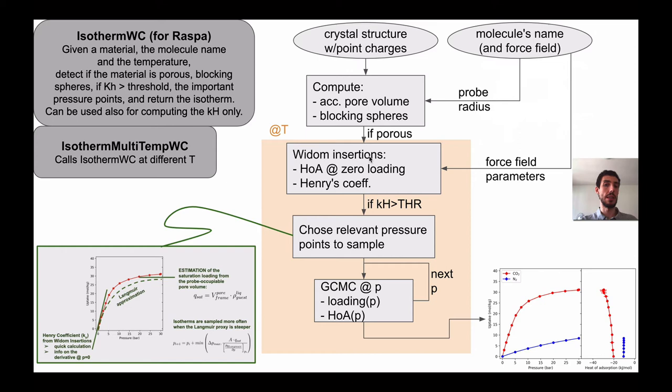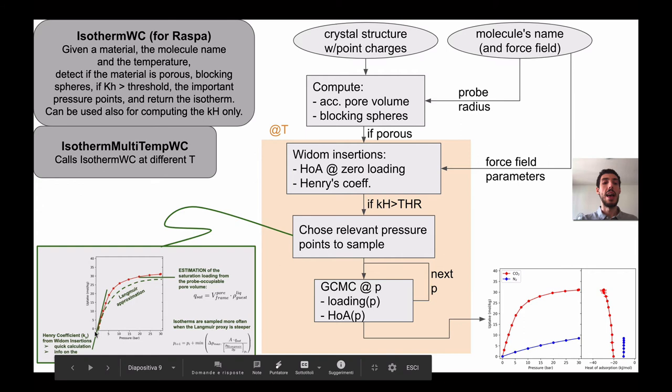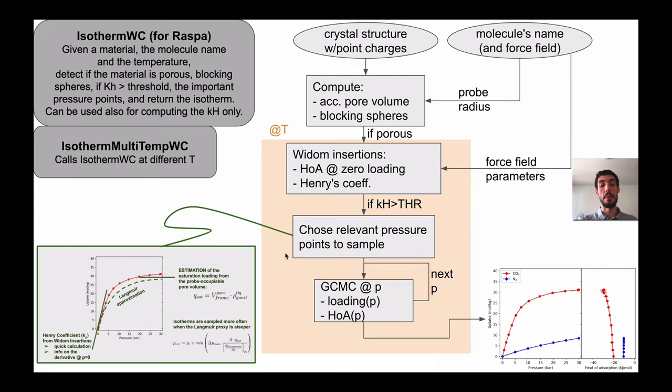If it's porous, so if the molecule can enter at all in this material, we run Widom insertion that basically computes the initial slope of the isotherm. And if it's not too low, otherwise the material wouldn't be interesting, we choose relevant pressure points to sample. So here, I don't want to enter in detail, but we are guessing, given the saturation point and the Henry coefficient of the initial derivative, which are the important pressure points that we need to sample to have a smooth isotherm. And this is something that we don't know a priori without this logic. And for all these pressure points, we compute the loading with GCMC ending with our nice isotherm.